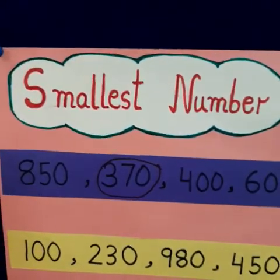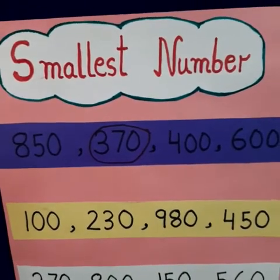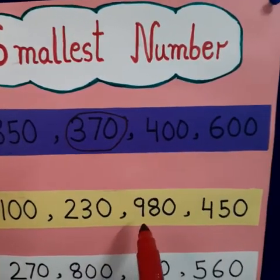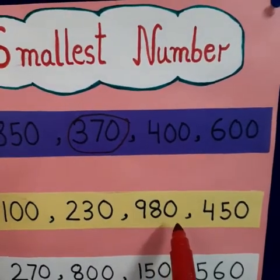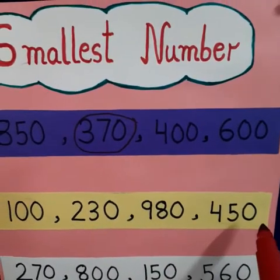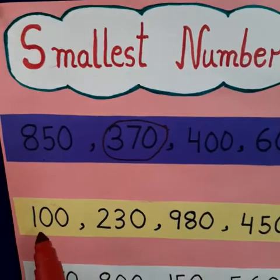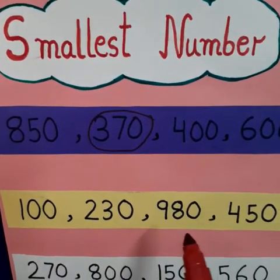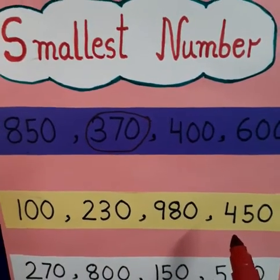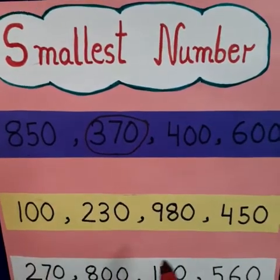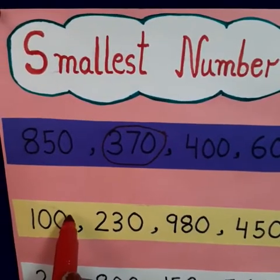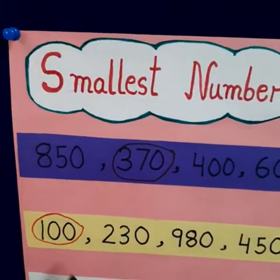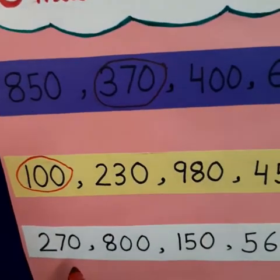See the next set: 100, 230, 980, and 450. Now at the hundreds place, the digits are 1, 2, 9, and 4. So which is the smallest one? Obviously 100, so we will circle 100.